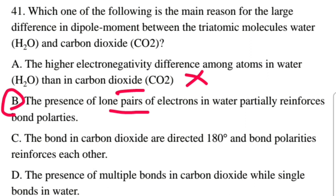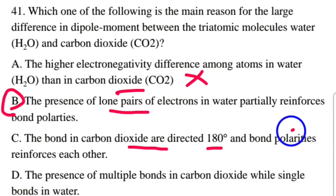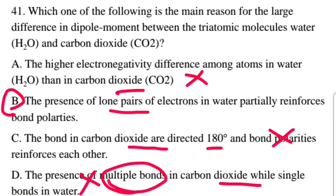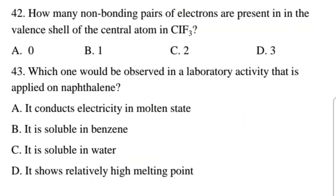C — the bond in carbon dioxide are directed 180 degrees, linear geometry, and the bond polarities reinforce each other. D — the presence of multiple bonds in carbon dioxide while single bonds in water. The presence of multiple bonds has bond polarity, so the correct answer is B.